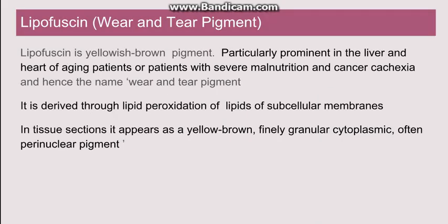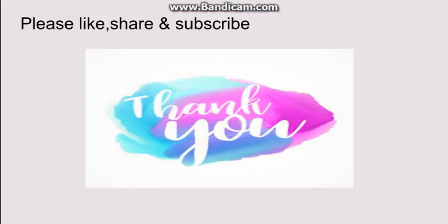Going to another pigment, lipofuscin — known as the wear and tear pigment. It is yellowish-brown in color and is mostly prominent in the liver and heart of aging patients or patients with severe malnutrition or cancer cachexia, hence named the wear and tear pigment. It is derived through lipid peroxidation of lipids of the subcellular membranes. In tissue sections it appears as a yellowish-brown granular pigment located in the perinuclear region of the cytoplasm.